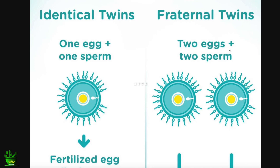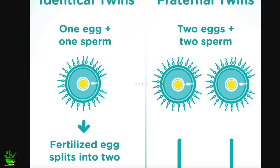Now the second type of twins is known as fraternal twins. Here, two eggs are released from the ovary of the mother, so there are two eggs in the fallopian tube. These two eggs are fertilized by two different sperm from the father. Many sperms are trying, but only the strongest sperm is able to enter each female egg.